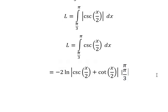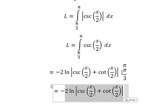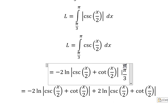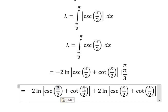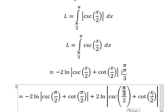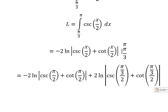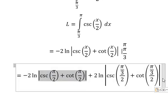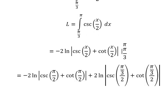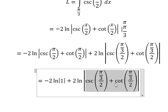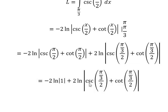And now we have the final answer. So we put π in here and here, and π over 3 we put in here and here. Now we need to calculate. We have ln of 1, and we have 2 in here.